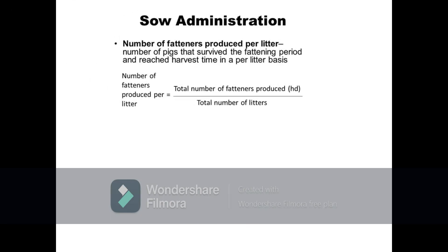Next parameter is the number of fatteners produced per litter. This refers to the average number of pigs that survive the fattening period and reach market weight on a per litter basis. It is calculated as total number of fattened pigs harvested divided by the total number of litters from which these harvested fatteners are produced. For example, if there were 105 fatteners harvested from 12 litters, the average number of fatteners produced per litter is 105 divided by 12, equals 8.75.